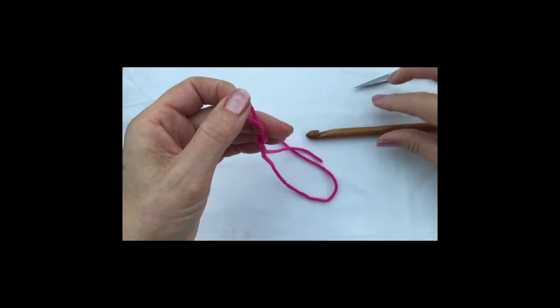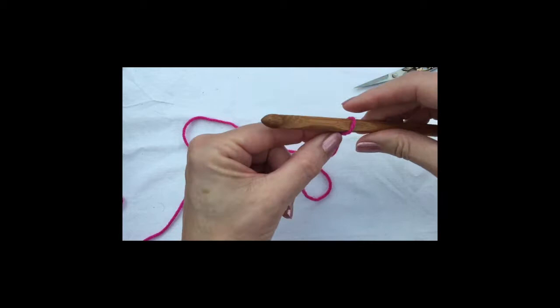I'm using a wooden crochet hook because I really like them. Sometimes I use metal ones and I'm using a really big one so that you can see really easily.